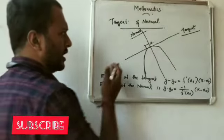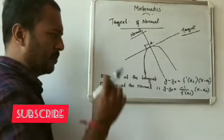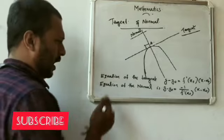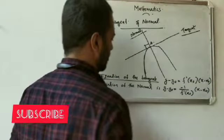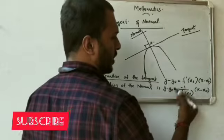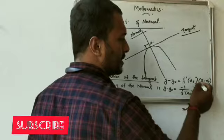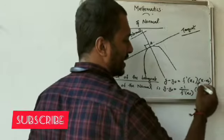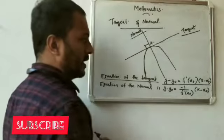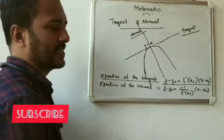The equation of the tangent is: y minus y0 is equal to f dash of x0 into x minus x0.